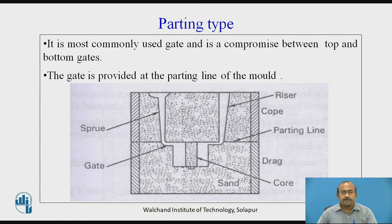Parting type — it is the most commonly used gate and is a compromise between the top and bottom gate. The gate is provided at the parting line of the mold, which is clearly visible in the diagram on screen. The parting line is where the gate is generated, interlinking the sprue and mold cavity. The cope, drag, sprue, riser, and core elements are shown in the diagram.